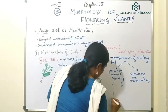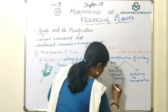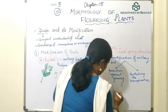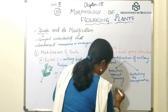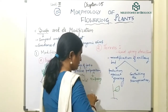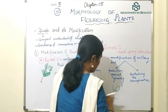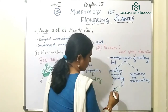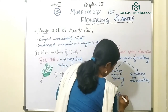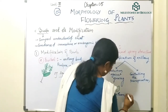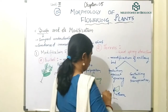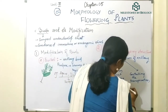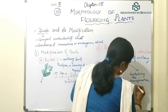On the stem, where a leaf is attached, the axillary bud is modified into a pointed thorn structure. This kind of structure is seen in Bougainvillea and Citrus plants.